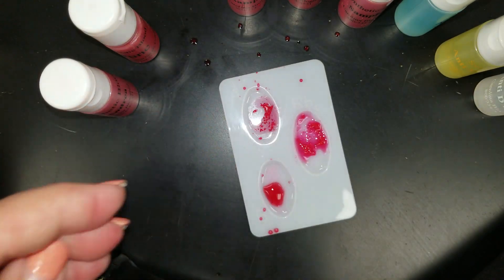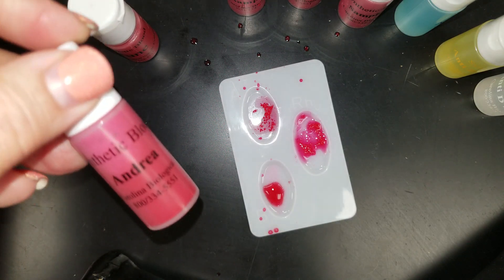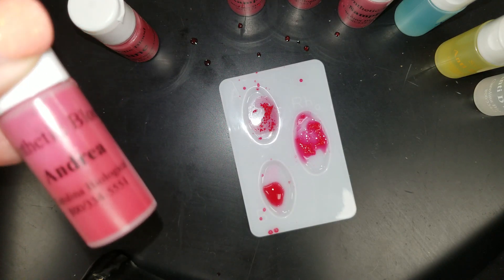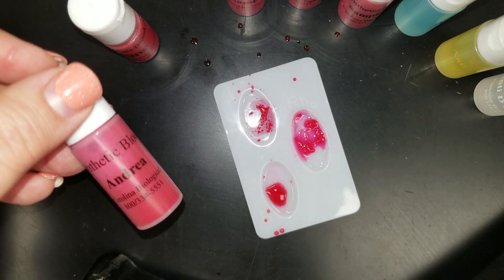So on your lab, you would write that Andrea had a reaction for A, she had a reaction for B, and she had a reaction for this Rh.